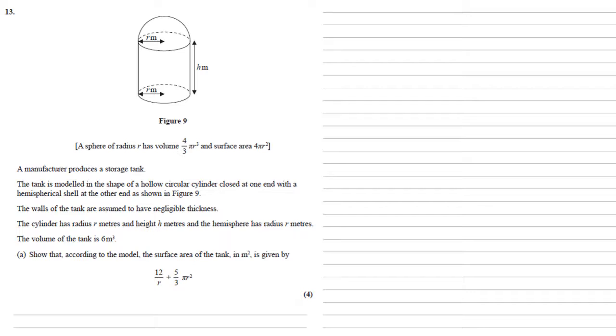A manufacturer produces a storage tank. The tank is modeled in the shape of a hollow circular cylinder, closed at one end, with a hemispherical shell at the other end, as shown in figure 9. The walls of the tank are assumed to have negligible thickness. The cylinder has radius r meters and height h meters, and the hemisphere has radius r meters. The volume of the tank is 6 cubic meters.